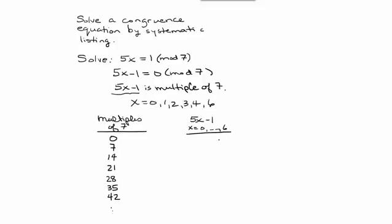But what we would like to do is to find a 5x minus 1 value that matches with one of these multiples of 7. So for example, if x is equal to 0, then we would have the value 5 times 0 minus 1 or negative 1. If x is equal to 1, we would have 5 times 1 is 5 minus 1 is 4.